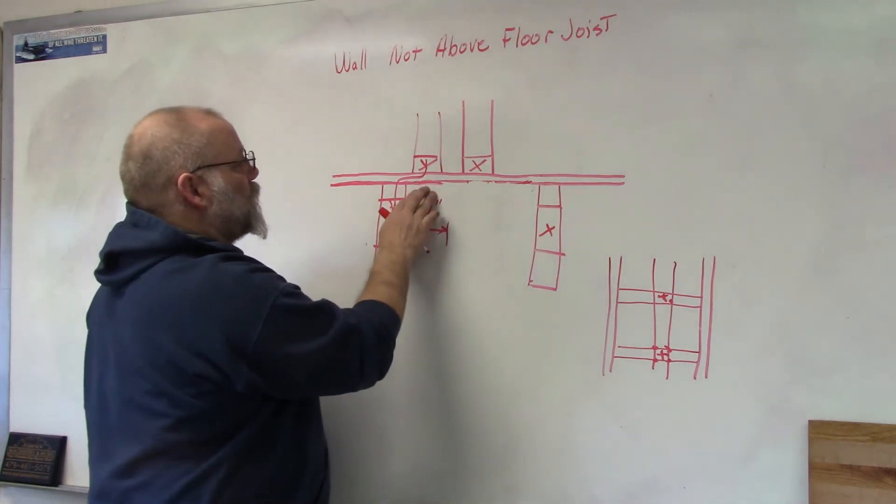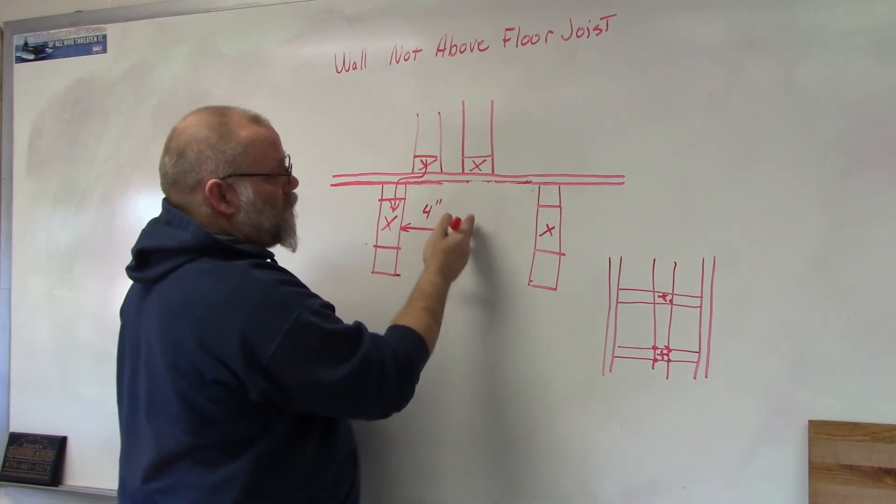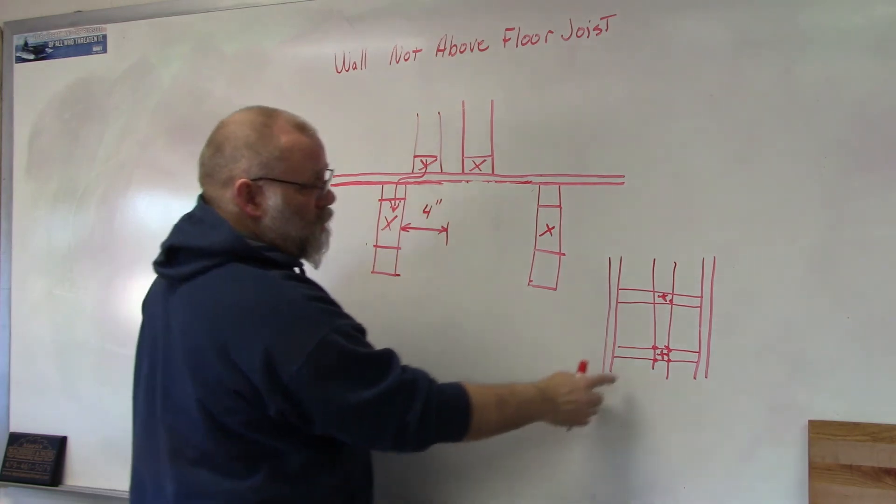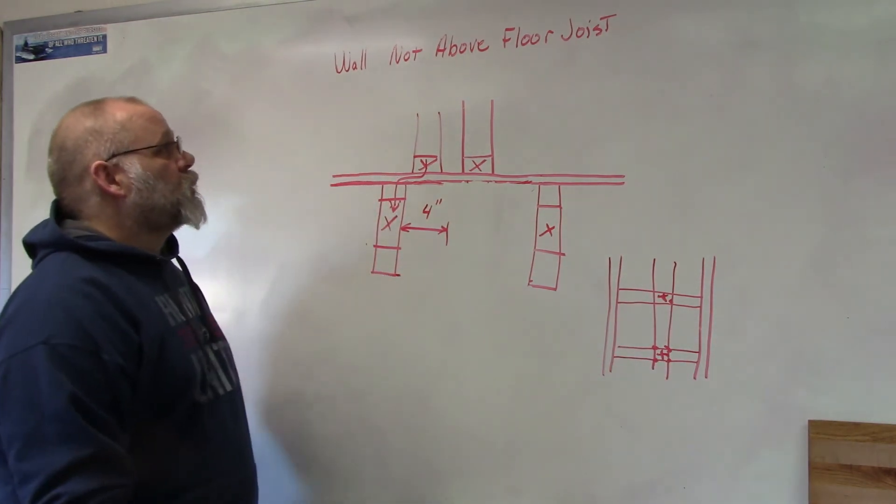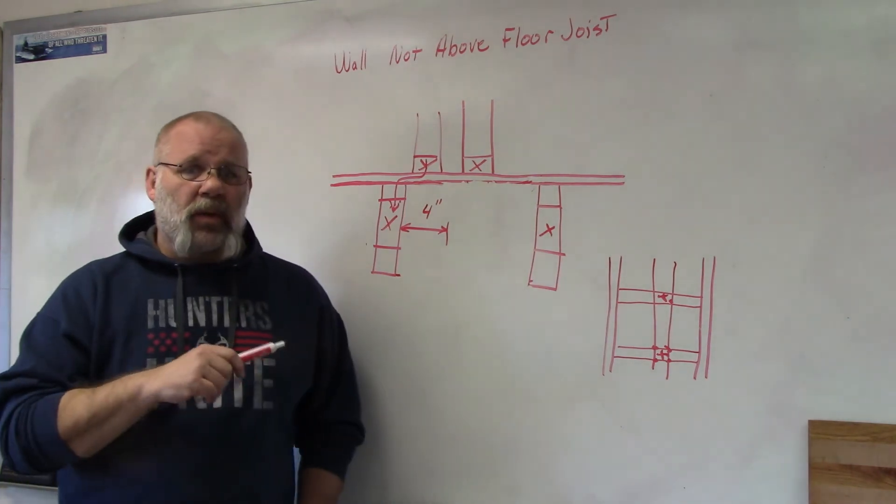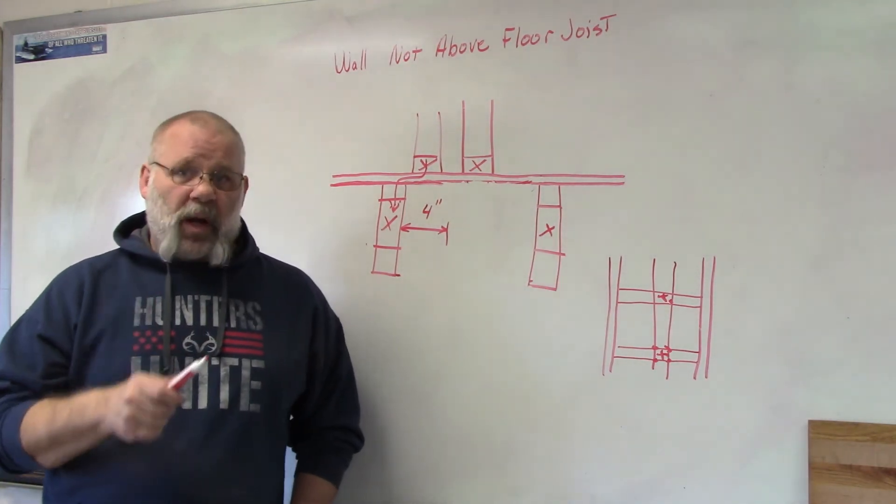So if it's over here less than four inches, you're good. If it's out here in the middle, you have to reinforce it. Reinforce it with another floor joist or by blocking underneath the floor. So make sure you check all those when you're building your walls to make sure they're on something solid.